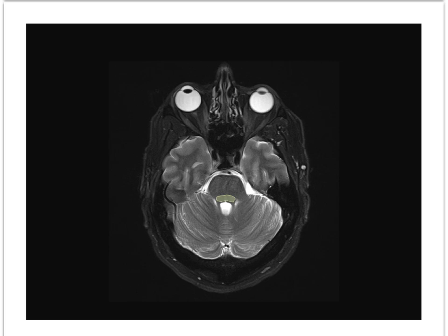This is the tegmentum of the pons, separated by the medial lemniscus of the pons from the basilar pons shown in the more ventral portion. The basilar artery and the bilateral internal carotid arteries supply the brain with oxygen and nutrients, and the brain receives about 25% of cardiac output — more than any other tissue by weight.